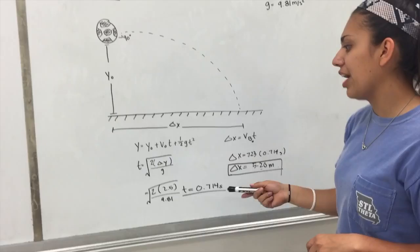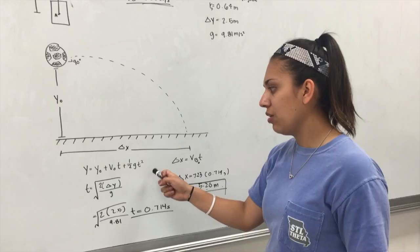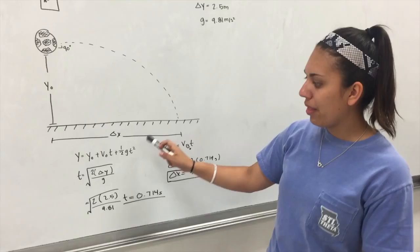To find delta X, we first need to solve for T. To solve for T, we first have to use the equation Y equals Y naught plus V naught times T plus one-half G T squared. We solve for T from that, and when we plug in the numbers, we get T equals 0.714 seconds.